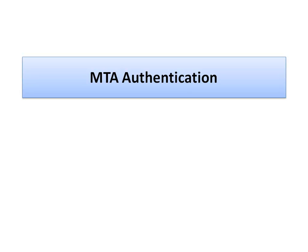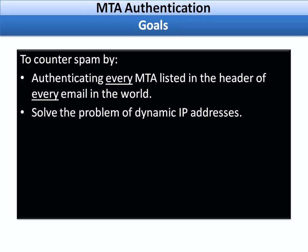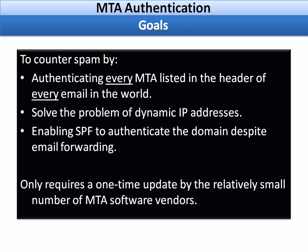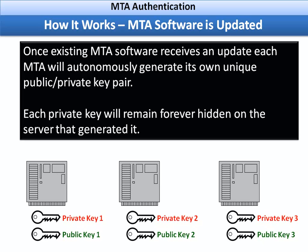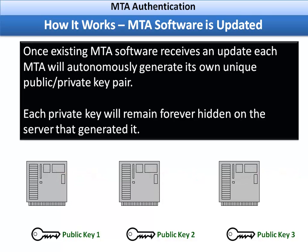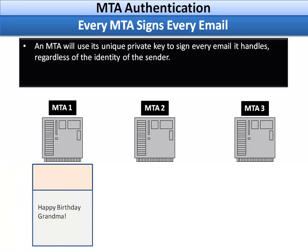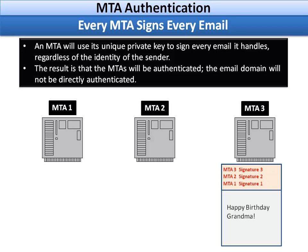The first system I am going to explain is MTA authentication. Its goals are to counter spam by authenticating every MTA listed in the header of every email in the world, solve the problem of dynamic IP addresses, and enable SPF to authenticate the domain despite email forwarding. This system only requires a one-time update by the relatively small number of MTA software vendors. Once existing MTA software receives an update, each MTA will autonomously generate its own public-private key pair, the private key remaining forever hidden on the server. Every MTA will sign every email it touches, and as a result, the MTAs are authenticated.